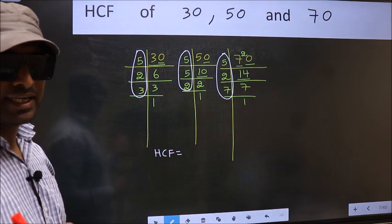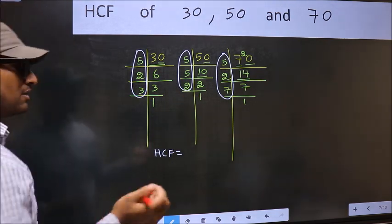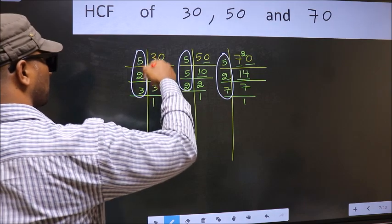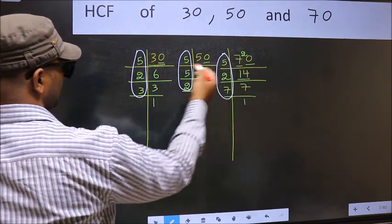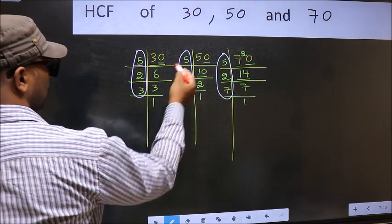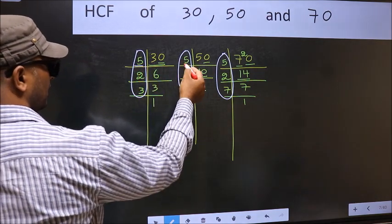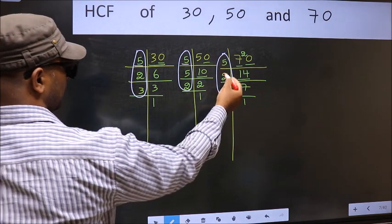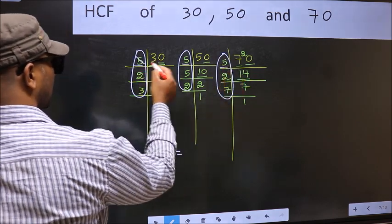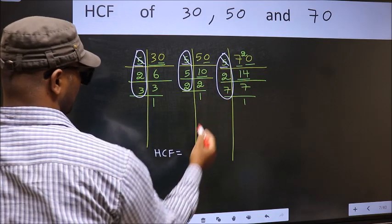So now let us find the numbers which are present here, here, and also here. Starting with the number 5. Do we have 5 here? Yes. Go to the next place. Do we have 5 here? Yes. So cut 5 right here.